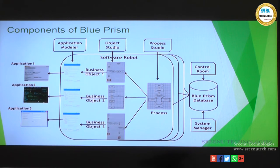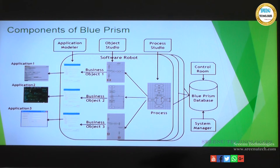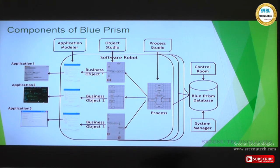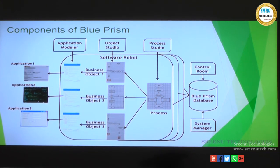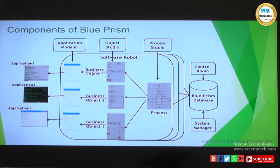Process studio has a series of steps — for example, go to application one and read some data, go to application two and read some data, go to application three and paste some data. This series of steps is configured in process studio. It is a graphical representation of the steps which need to be executed to complete a process and produce an end result. The stages in process studio interact with the object studio, which acts as an interface to the application being communicated with.